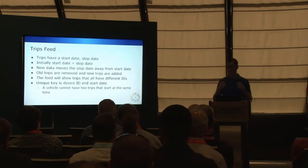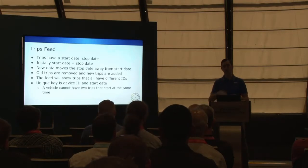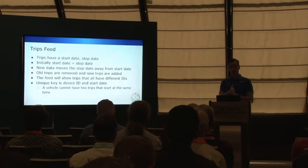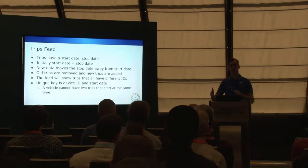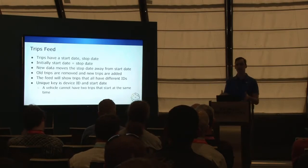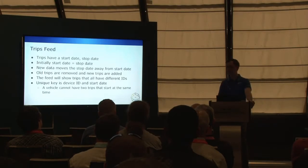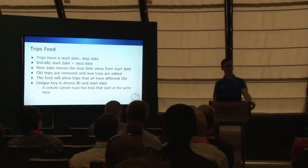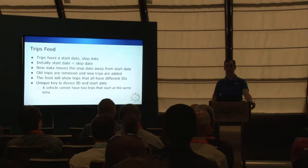As we get more data showing the vehicle is still moving, we bump out the stop date. Geotab creates the trip with the start and stop date and saves it — you can pull that out. Later, when we get a new trip for the same vehicle starting at the same time but with a different stop time, we delete the previous trip and write in the new one. It's up to you to match up trips by vehicle and start time — that is the unique combination. A single vehicle cannot have two trips that start at the same time, so if you see that, you know a trip has been replaced.